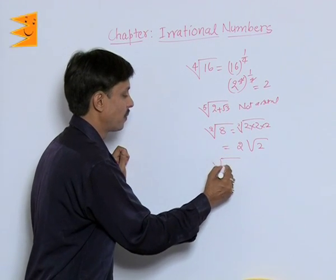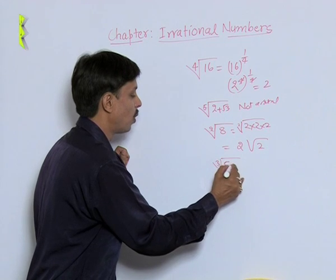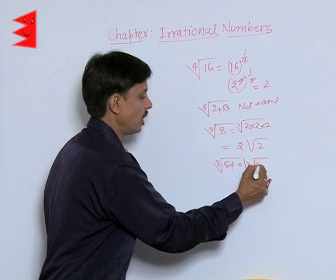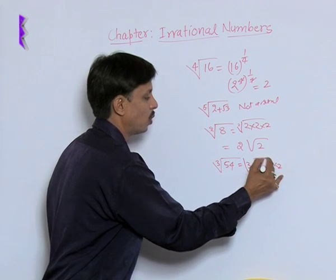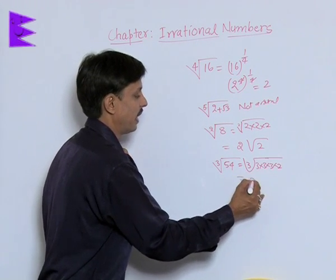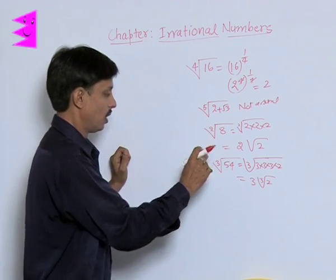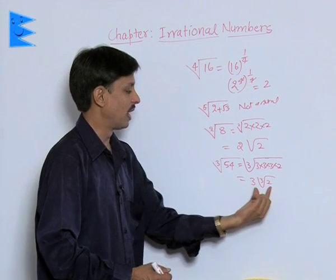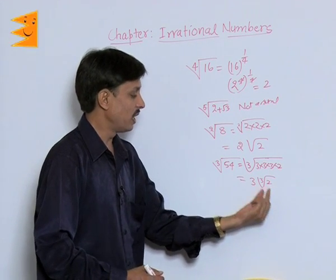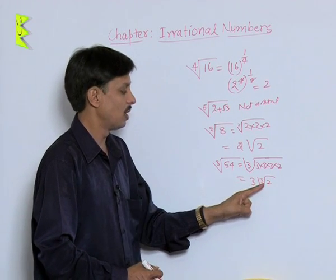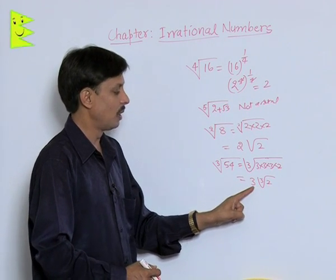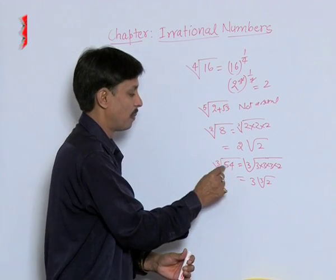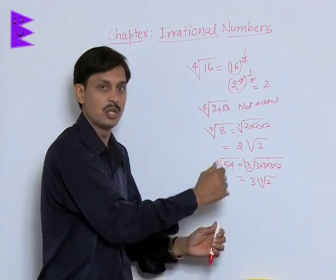Similarly, in the case of the cube root of 54, we can write it as the cube root of 3 × 3 × 3 × 3 × 3 × 2. Wait — this simplifies to 3 times the cube root of 2. The cube root of 54 appears to be a pure surd in its original form, and its final answer is irrational. It has an irrational part — cube root of 2 — and a rational part — 3. So in its original form it is a pure surd, but when simplified it becomes a mixed surd.